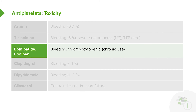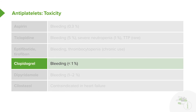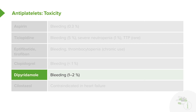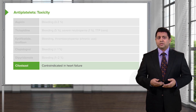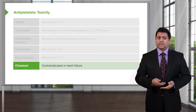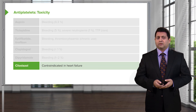For the direct GP2B3A inhibitors, side effects include bleeding and thrombocytopenia with chronic use, though we only use these drugs short-term. Clopidogrel has a bleeding rate of less than 1%, and when combined with aspirin, the bleeding rate increases. Dipyridamole adds approximately 1–2% additional bleeding risk on top of existing risk. Finally, peripheral drugs such as those for claudication are contraindicated in heart failure — this will be on your exams, so know this.